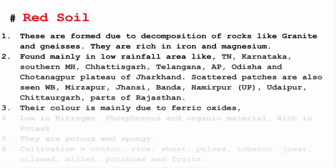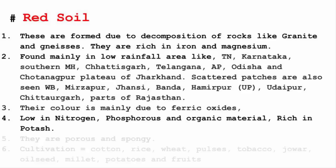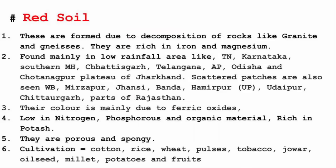The color of red soil is red due to the presence of ferric oxide, which is one of the main oxides of iron. It is low in nitrogen, phosphorus and organic material but rich in potash. This soil is very porous and spongy — if you pour water on it, it will just suck it in. The crops that can be grown on red soil are cotton, rice, wheat, pulses, tobacco, jowar, oilseeds, millet, potatoes and fruits.